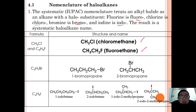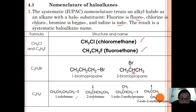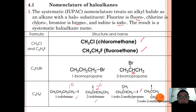For the formula C3H7Br there are two isomers: 1-bromopropane, where bromo is at C1, and 2-bromopropane, where bromo is at C2. For C4H9I there are four isomers: 1-iodobutane, 2-iodobutane, 1-iodo-2-methylpropane, and 2-iodo-2-methylpropane. 1-Iodobutane and 1-iodo-2-methylpropane are primary haloalkanes, 2-iodobutane is secondary, and 2-iodo-2-methylpropane is tertiary.